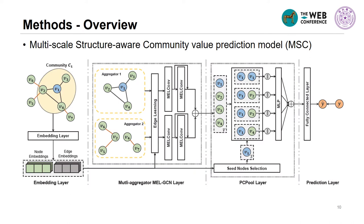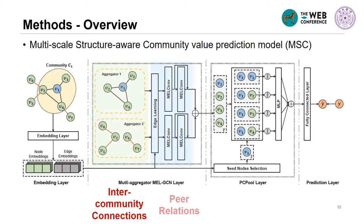To address the challenges, we developed a multi-scale structure-aware community value prediction model based on graph neural network — MSC. Overall, it contains four layers with three designs: a multi-aggregator framework for capturing inter-community connections, a newly designed GCN layer called MELGCN for modeling the effects of pure relations, and a new pooling method for GCN to model the effects of community structure better. Now let's go into the details of each design.